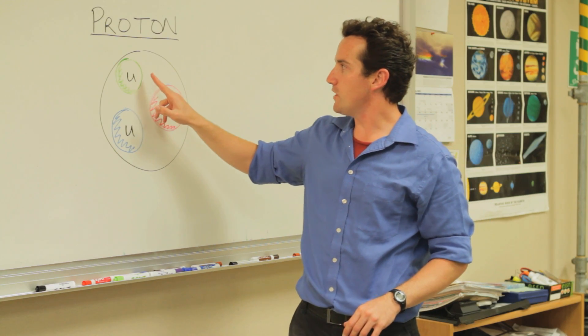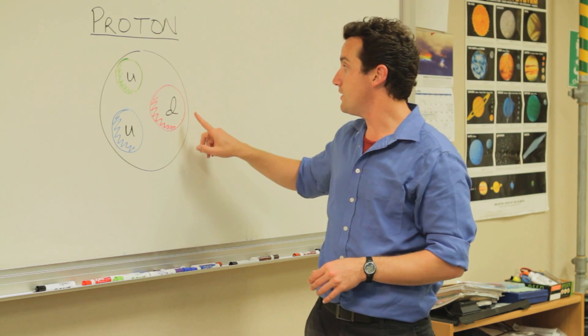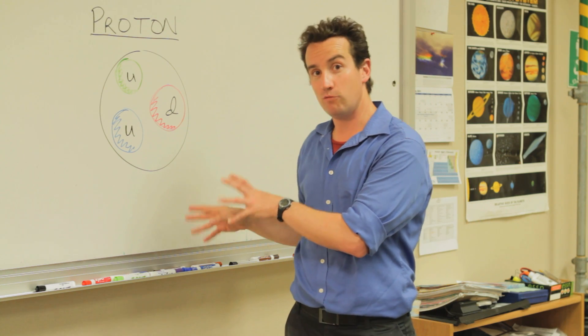You might be interested to know that the up quark and the other up quark are both positive two-thirds charge, and the down quark is negative one-third charge, giving it the overall charge of positive one.